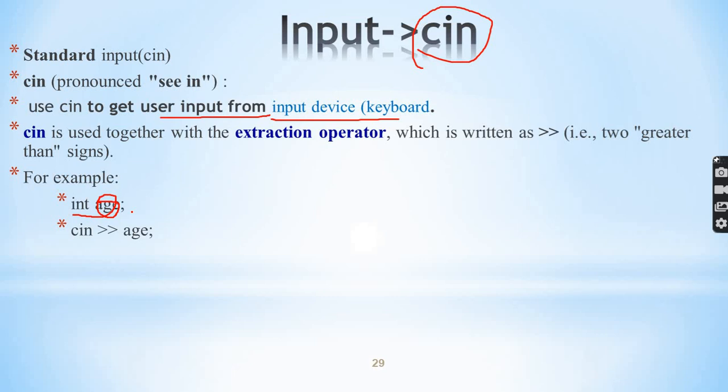You can use cin with the extraction operator to get user input. So you can specify a variable and cin will extract the input from the user.